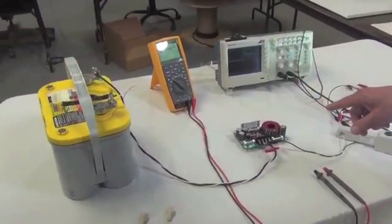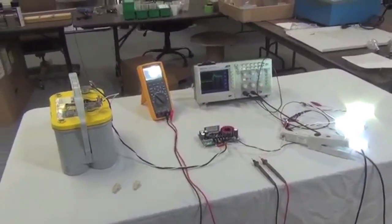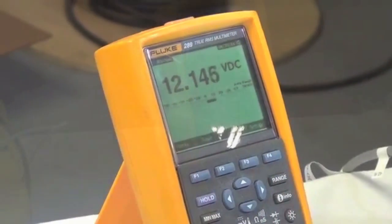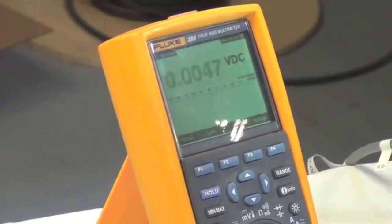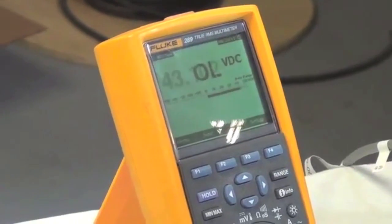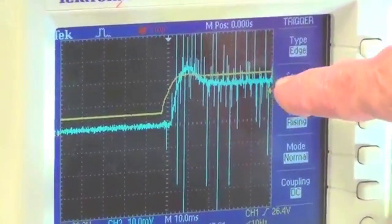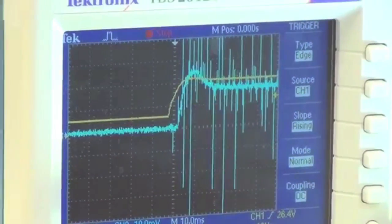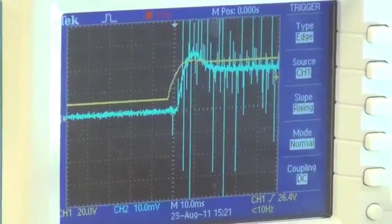This is the overall test setup: the battery, the unit, and the lights. When it's turned on, you can see that the input voltage is about 12 volts and the output voltage is about 43 volts. On the scope you can see that the current is about 1.7 amps, and again, the output voltage is 43 volts.